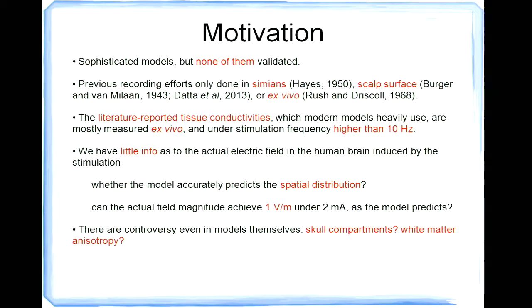And also, even in the model itself, there are still controversial issues like people have been arguing about to remodel the skull as multiple layers, including the bone marrow or just a single layer. And the other problem is, should we include the white matter anisotropy so that we can model the nerves and white matter tract. So this motivates us. We need to do some real recording to test if the model we have is correct or not.